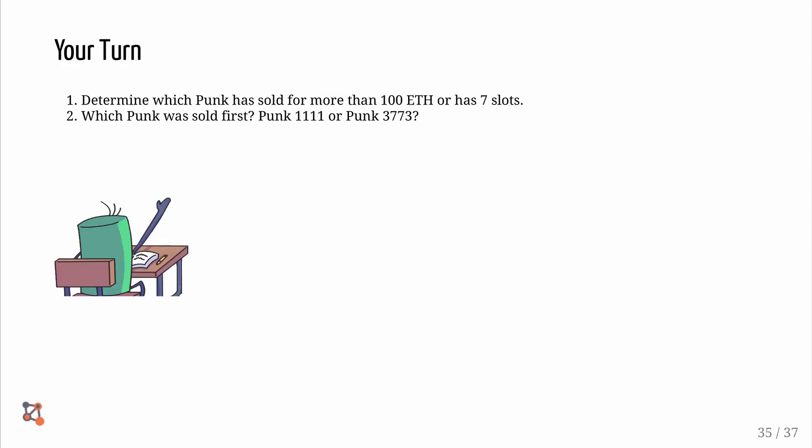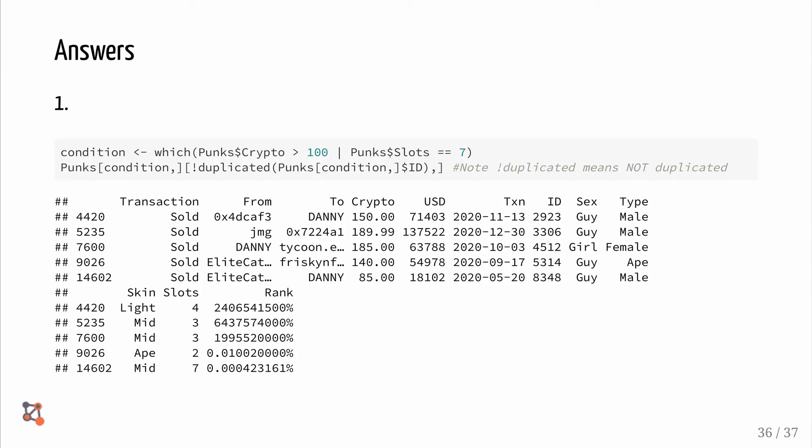Your turn. Determine which punk has sold for more than 100 Ethereum or has seven slots. Which punk was sold first? Punk 1111 or punk 3773? Here are the answers for you to look at.